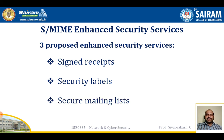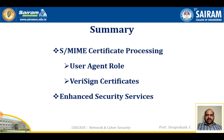For secure mailing lists: when a user sends a message to multiple recipients, a certain amount of per-recipient processing is required, including use of each recipient's public key. The user can be relieved of this work by employing the services of an S/MIME Mail List Agent (MLA). A mail list agent can take a single incoming message, perform the recipient-specific encryption for each recipient, and forward the message. The originator only needs to send the message to the MLA, with encryption performed using the MLA's public key.